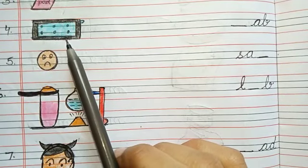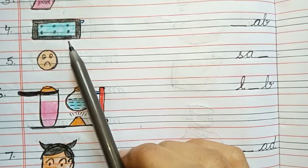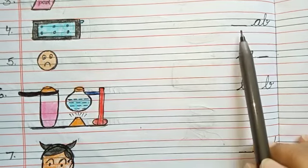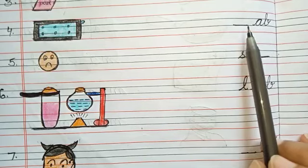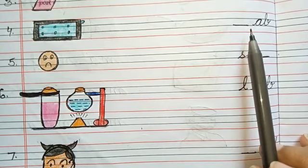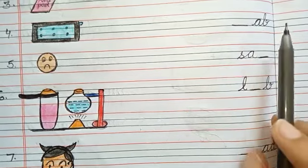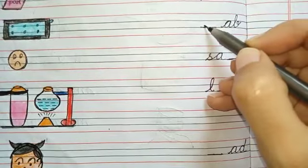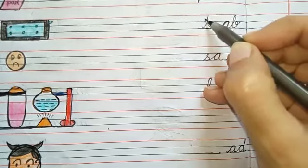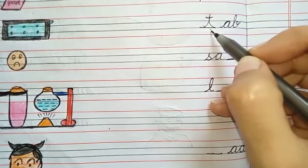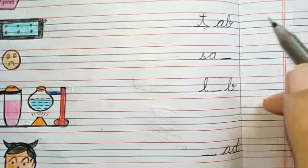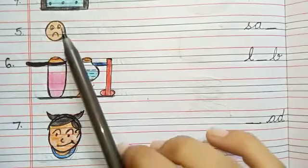Number four is tab. Tab. Ta ab. Tab. Ta ab. Ta kiska phonic sound hai? Yes, T. Phonic sound of T is ta. So, write down T here. T. Ta. Ta ab. Tab.